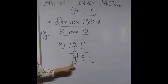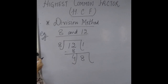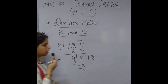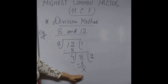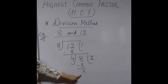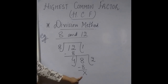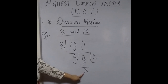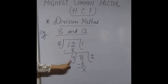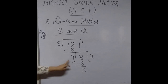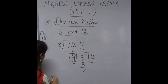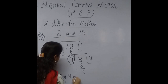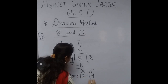Now look at this carefully. The remainder becomes the new divisor, and the previous divisor — which was 8 — becomes the new dividend. You have to carry out division again. In the table of 4, 4 goes into 8 twice, and you are left with no remainder. You carry out this division until the remainder becomes 0. When the remainder is 0, you stop. The HCF is the divisor that made the remainder 0, which is 4. Therefore, HCF of 8 and 12 is equal to 4.